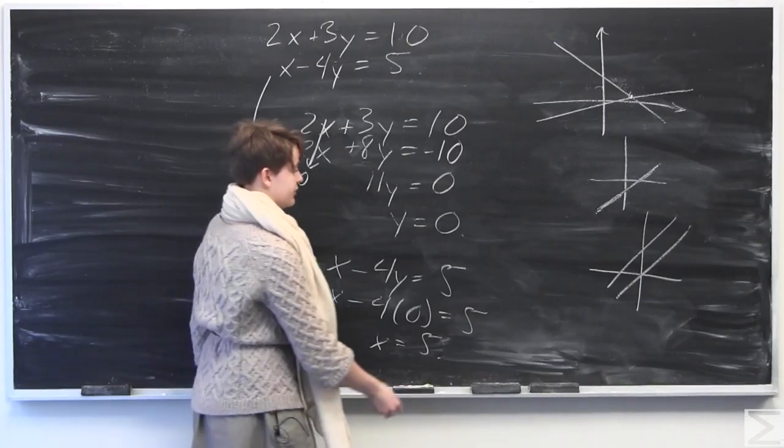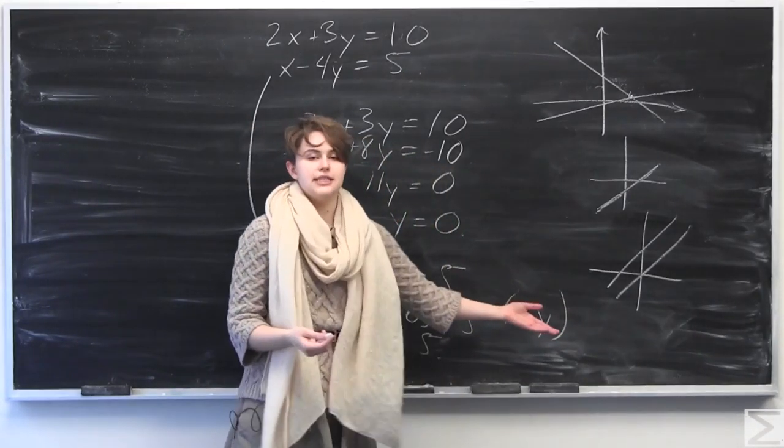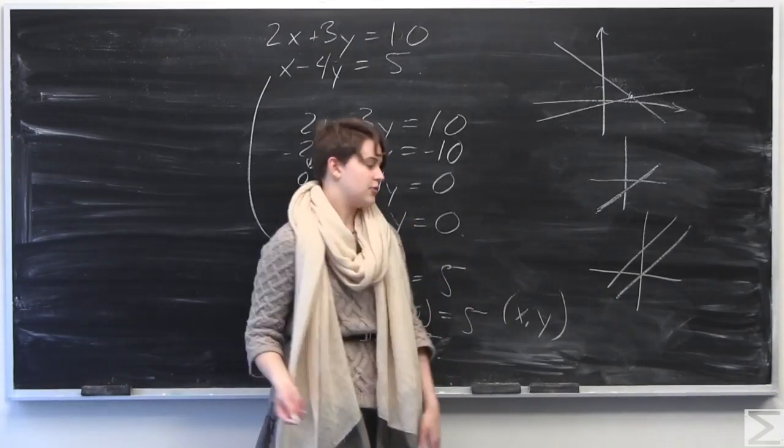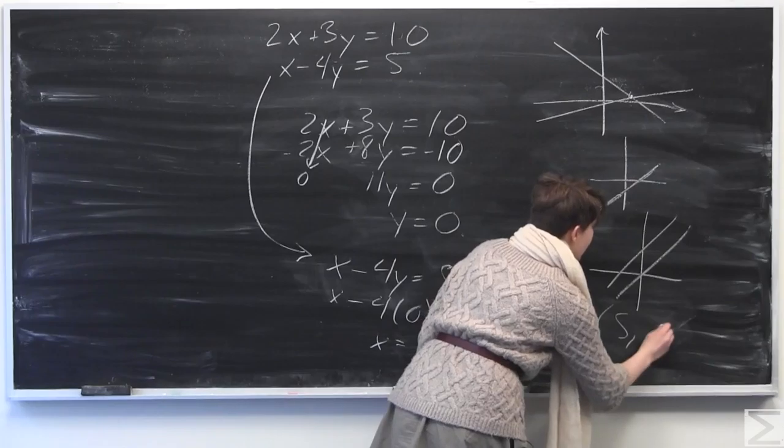So now we have our solution, which we can write as an ordered pair. x, y. Usually best to write these in alphabetical order unless explicitly told otherwise. x, y is an ordered pair. x is equal to 5. And y is equal to 0.